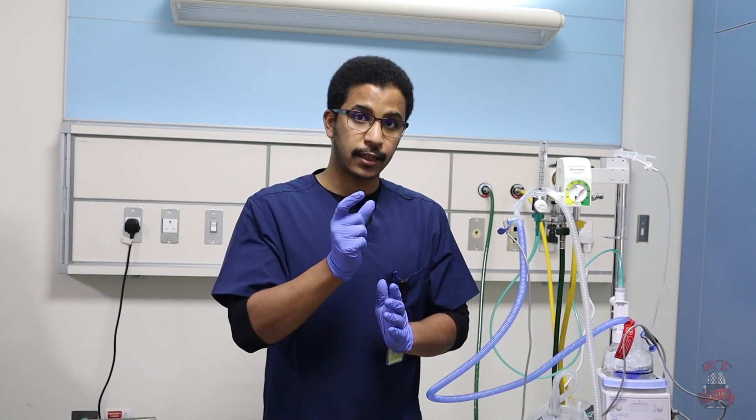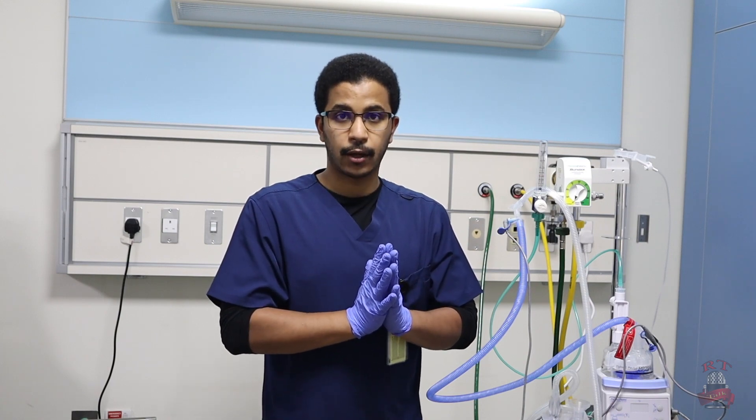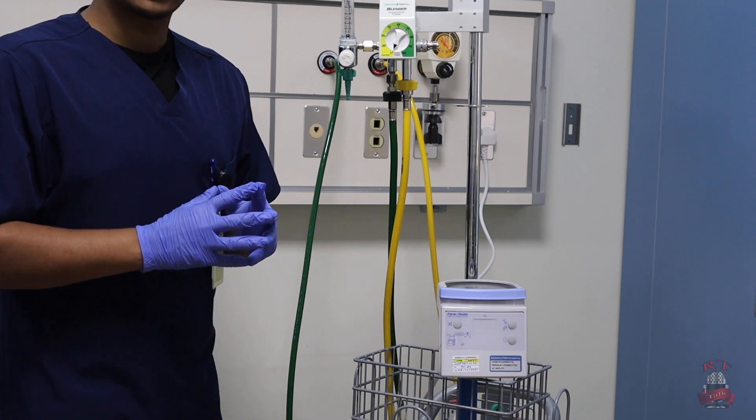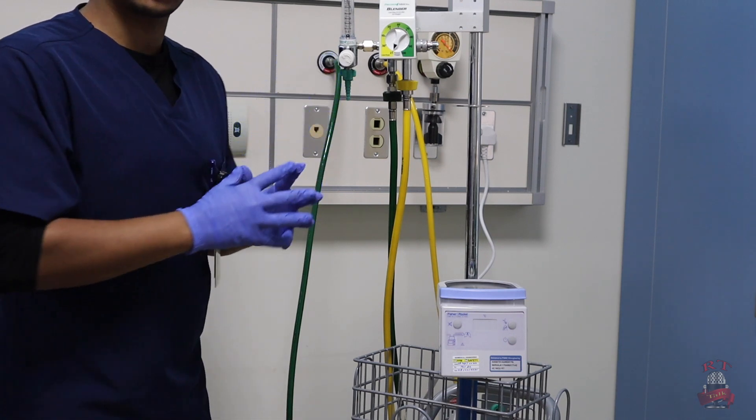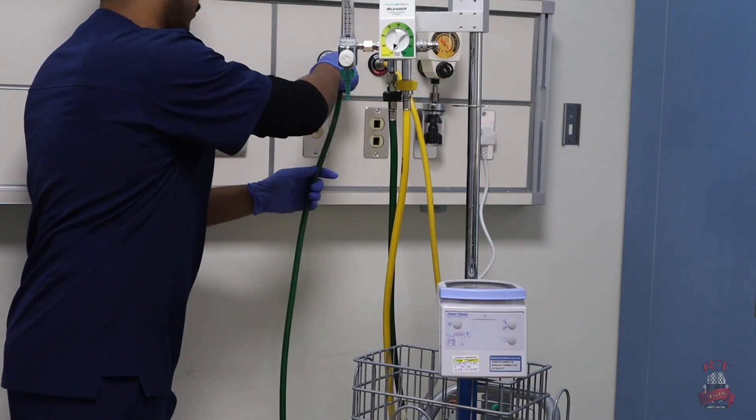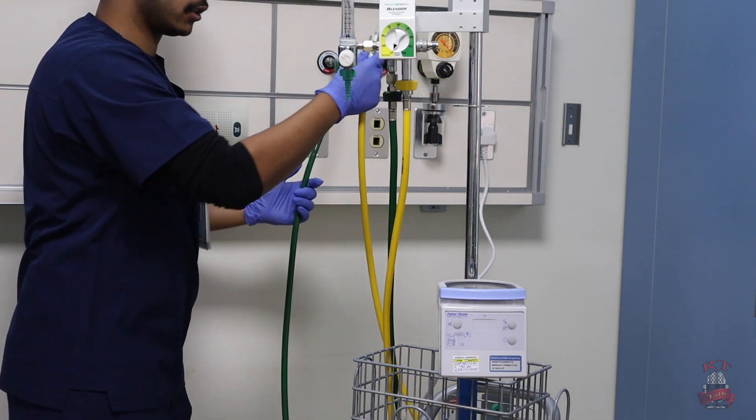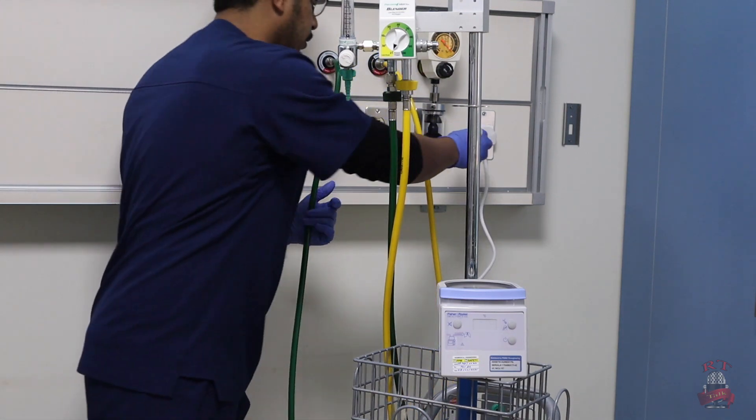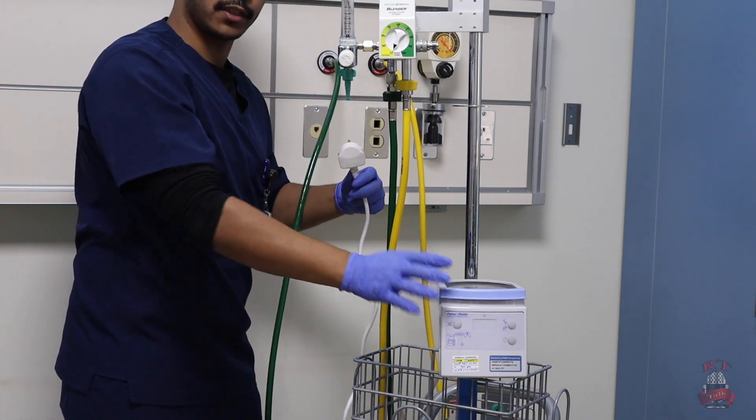First, after you collect what you need like oxygen blender and your bubble CPAP system kit and the nasal prong or the mask or what we call the interface, we will see how to set up. Now we will start. In the beginning you will connect your oxygen blender, the oxygen air, and the medical air, and your electricity for your humidifier.